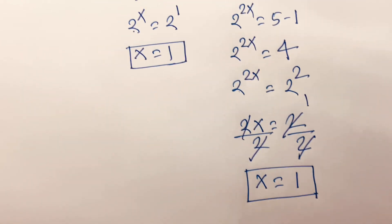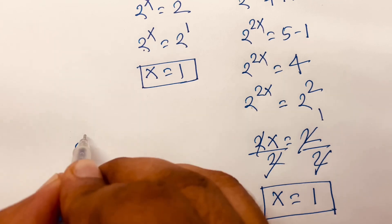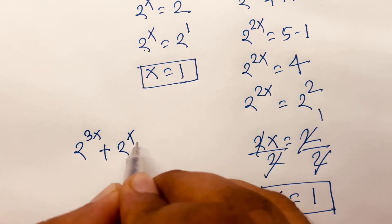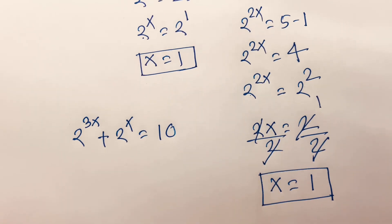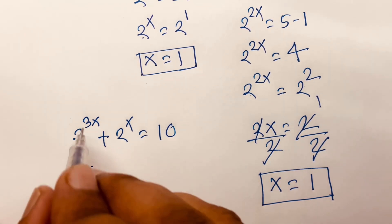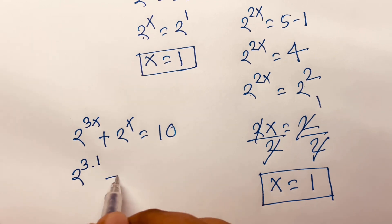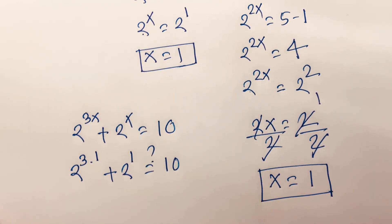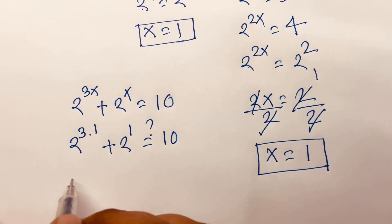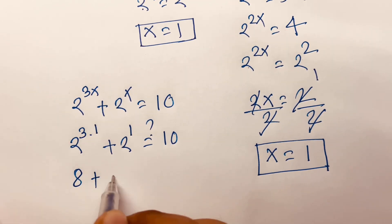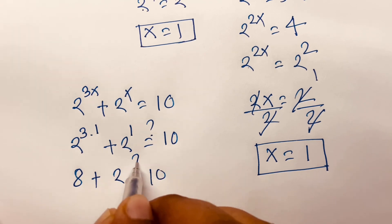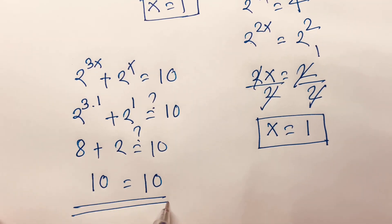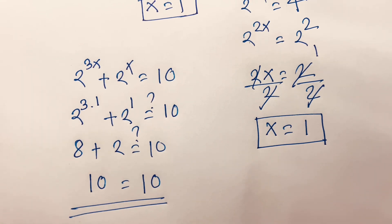Now let us check. Our equation is 2 to the power 3x plus 2 to the power x equals 10. With x equals 1: 2 to the power 3 times 1 plus 2 to the power 1 equals 10. That is 2 to the power 3 plus 2, which is 8 plus 2 equals 10. So 10 equals 10. We confirm that x equals 1 is the right answer.